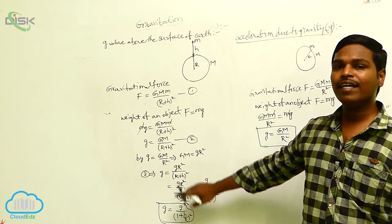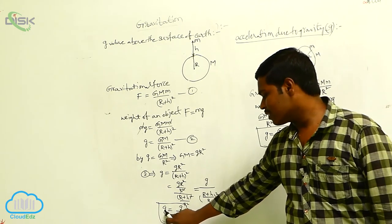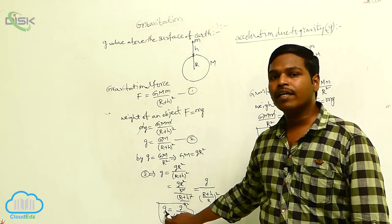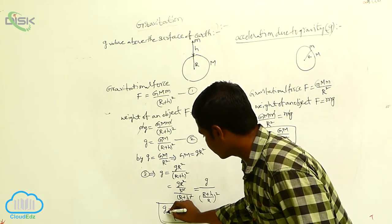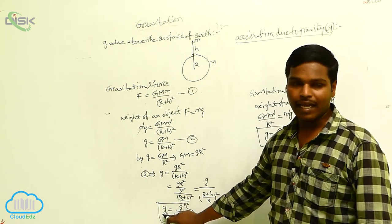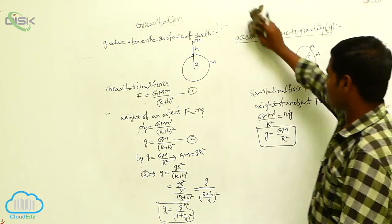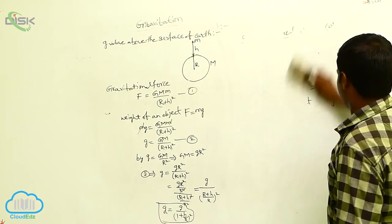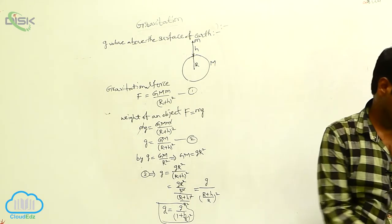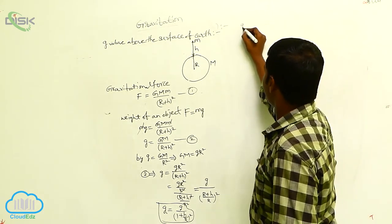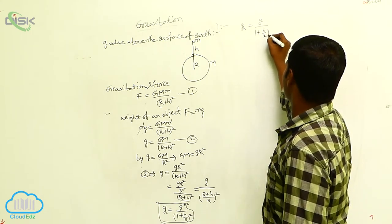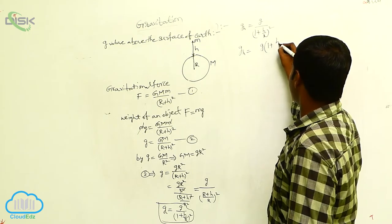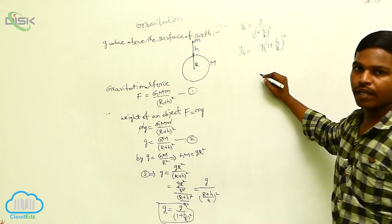If the height of an object increases from the surface of the Earth, then the acceleration due to gravity decreases. This is the acceleration due to gravity at height h. We can write: g_h = g/(1+h/R)², which can also be written as g_h = g × (1+h/R)^(−2).